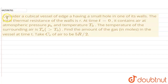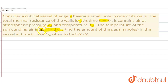Hello everyone. Our question is: consider a cubical vessel of edge A having a small hole in one of its walls. The total thermal resistance of the wall is given as small r. At time t = 0, it contains air at atmospheric pressure Pa and temperature T0. The temperature of the surrounding air is Ta, which is greater than T0. Find the amount of gas in moles in the vessel at time t.